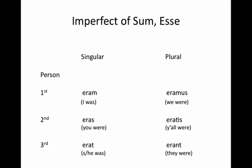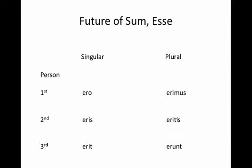Moving on to the future — once again, the future of sum, esse is completely irregular, so you're going to have to memorize these forms. The first person singular is ero, second person singular is eris, third person singular is erit, first person plural is erimus, second person plural is eritus, and third person plural is erunt.